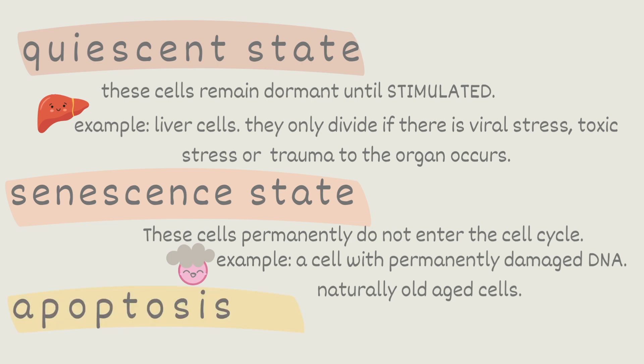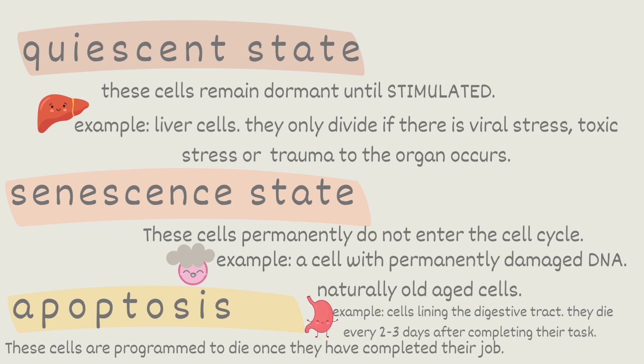Lastly, apoptosis. These cells are pre-programmed to die once they have completed their job. So for example, the cells that line your digestive tract are constantly dying. They die every two to three days after completing their work. Then new cells replace them instead of them regenerating.